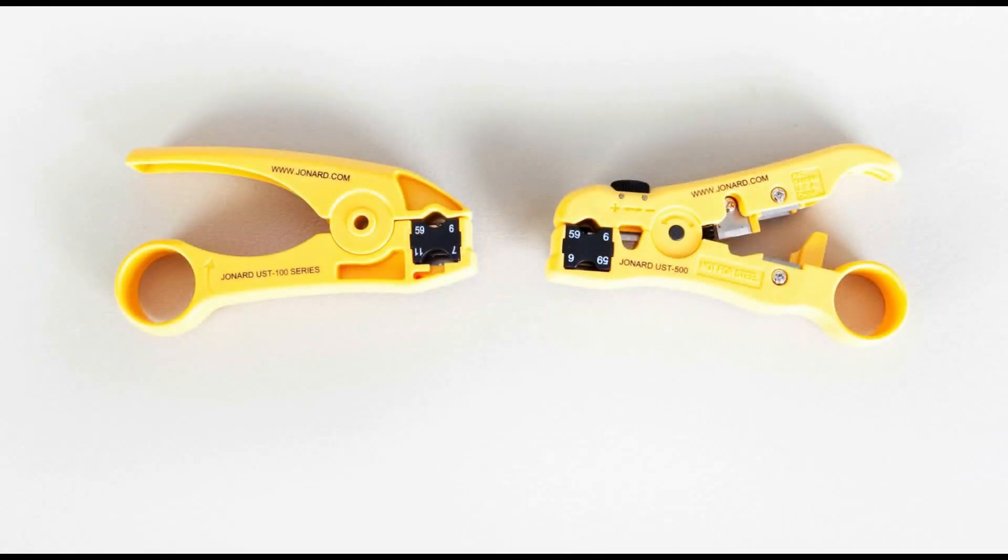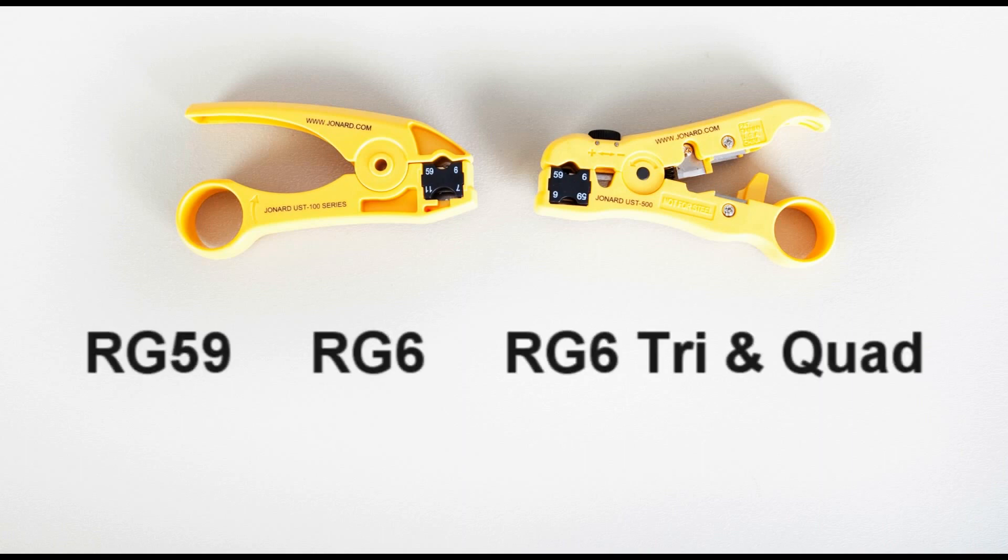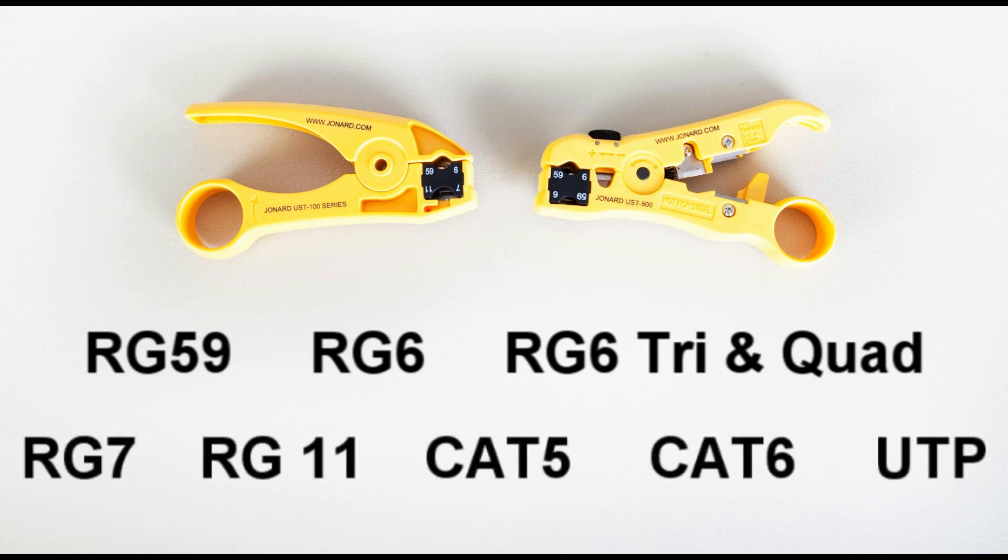The Jonard Industries UST100 series of cable prep tools are designed to strip RG59, RG6, RG6 Tri and Quad, RG7, and RG11 coaxial cables for CATV and video applications, and many CAT5, CAT6, and other UTP-type cables.